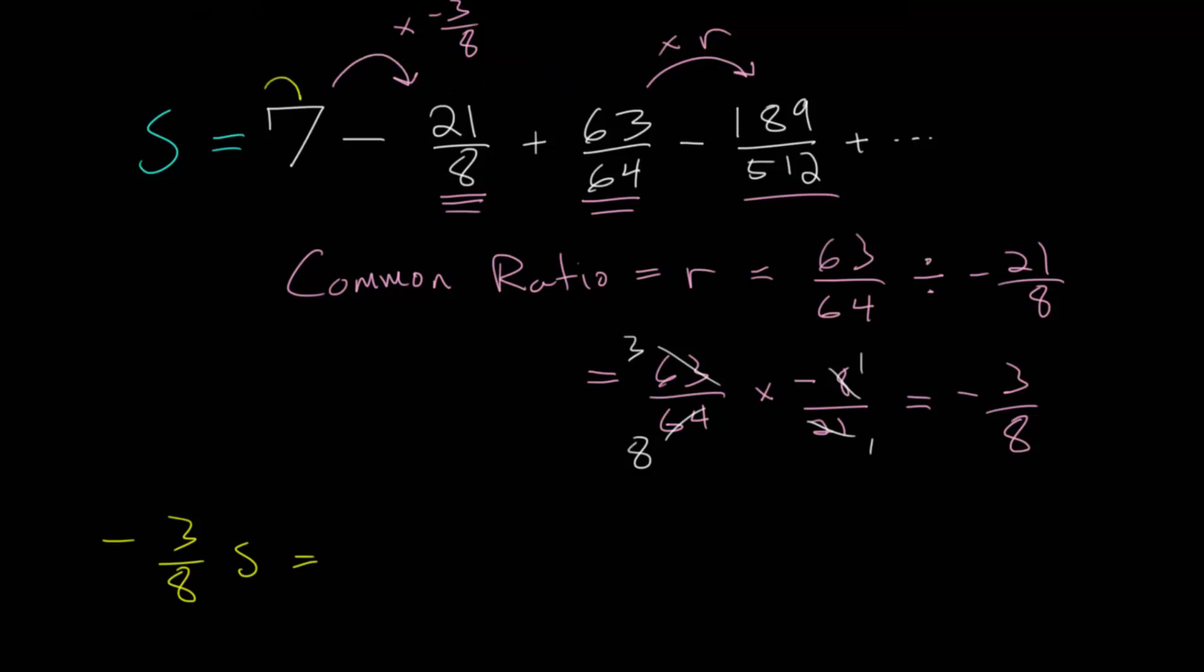And so, 7 times minus 3 eighths is just minus 21 over 8. Minus 21 over 8 multiplied by minus 3 eighths, that's going to give us plus 63 over 64. 63 over 64 multiplied by the common ratio will give us minus 189 over 512. It's essentially just the same terms, not including the first one. And this will go on forever.